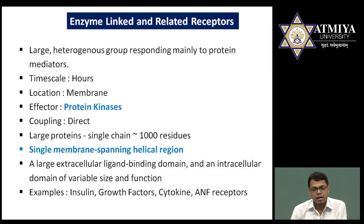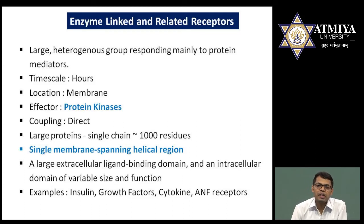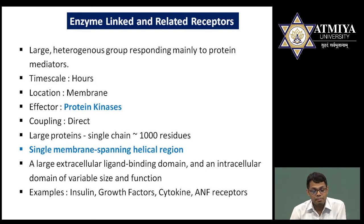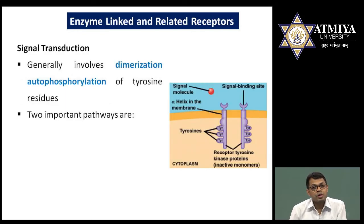Next are enzyme-linked and related receptors. These work relatively slowly — on the timescale of hours. They are located in the membrane and the effector molecule is protein kinase, meaning kinase molecules bind to the receptors and the receptor itself has kinase activity. Unlike GPCRs which are seven-transmembrane, enzyme-linked receptors have a single membrane-spanning helical region. Examples include insulin, growth factors, cytokines, and ANF (atrial natriuretic factor) receptors.